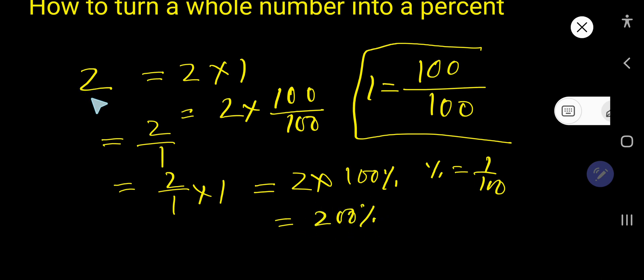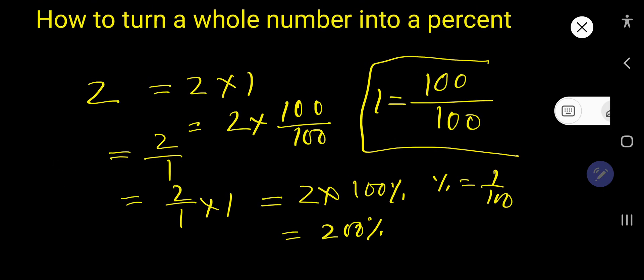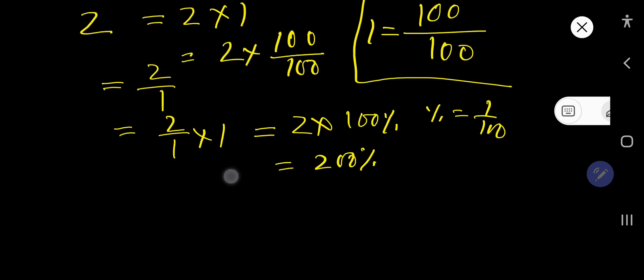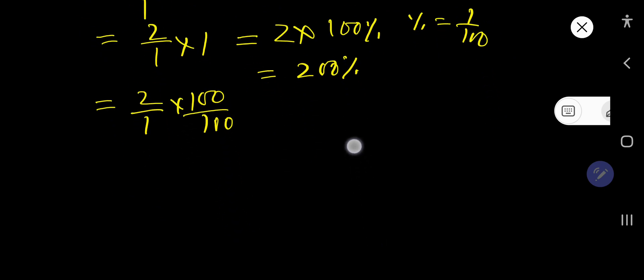So if I express the whole number 2 as a percent, then I have to write here 200 percent. Now from this form you can write 1 means 100 times 100, and percent.